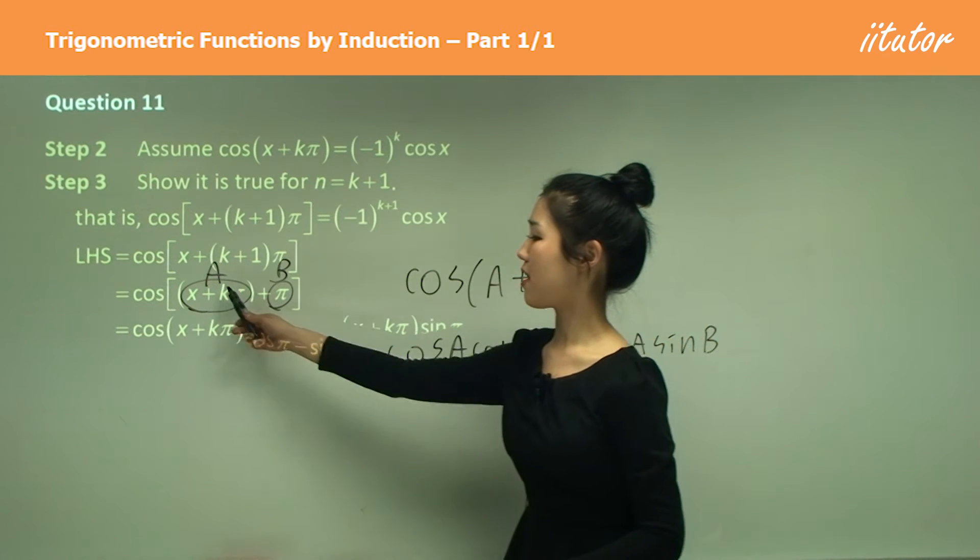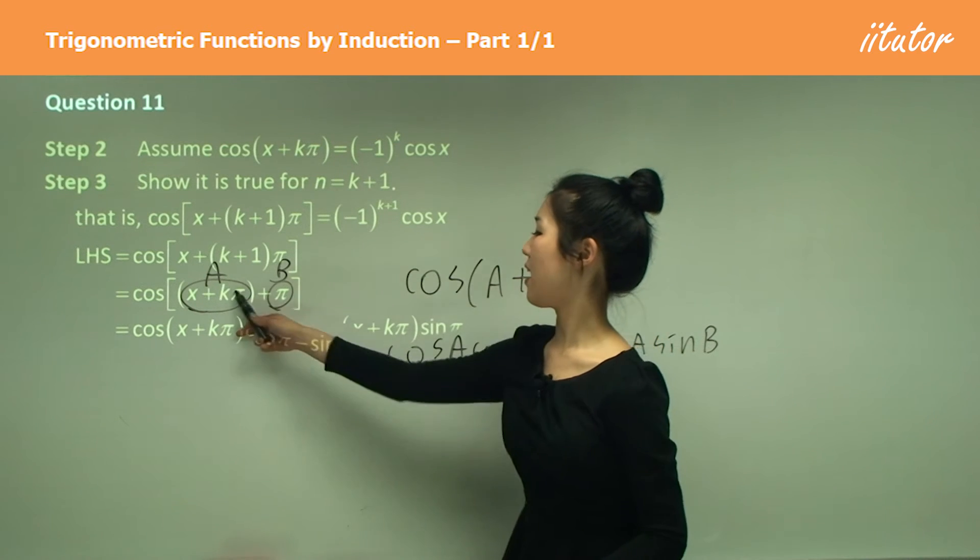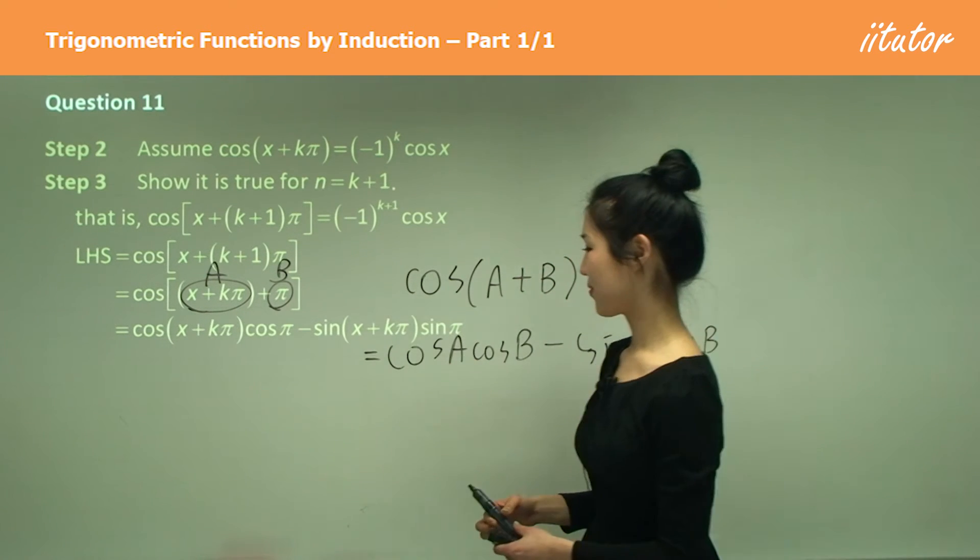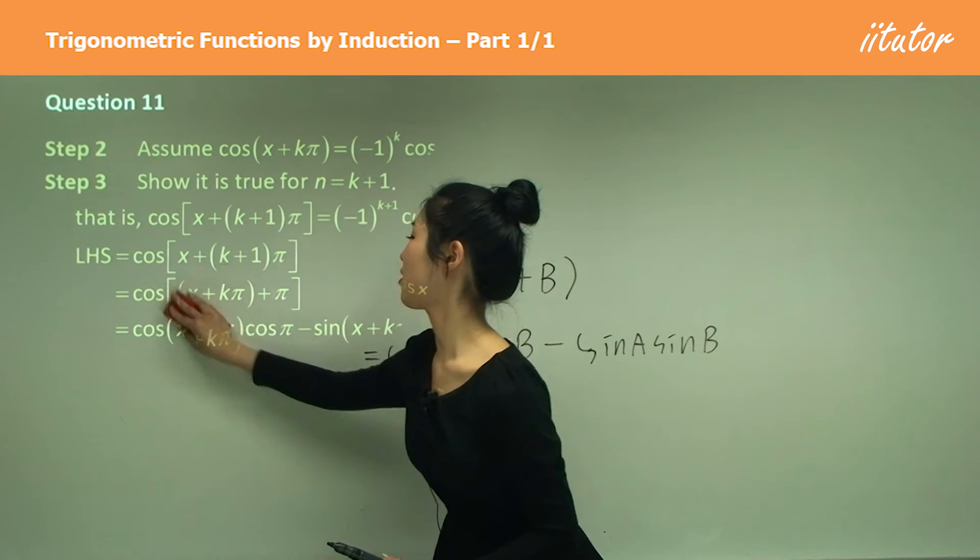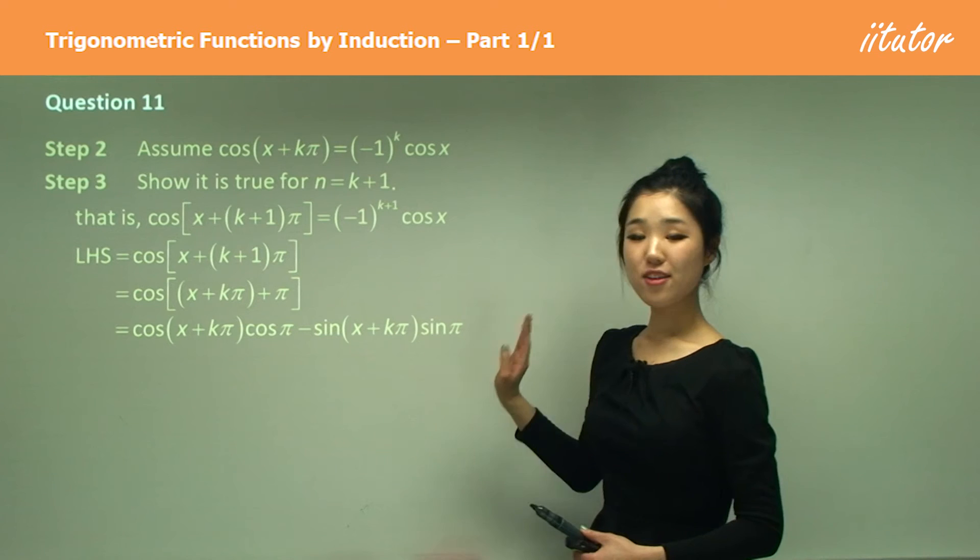So it's going to be cos a cos b minus sin a sin b. That's all I did, guys. So hopefully I don't have to explain this stuff. So I've got here.